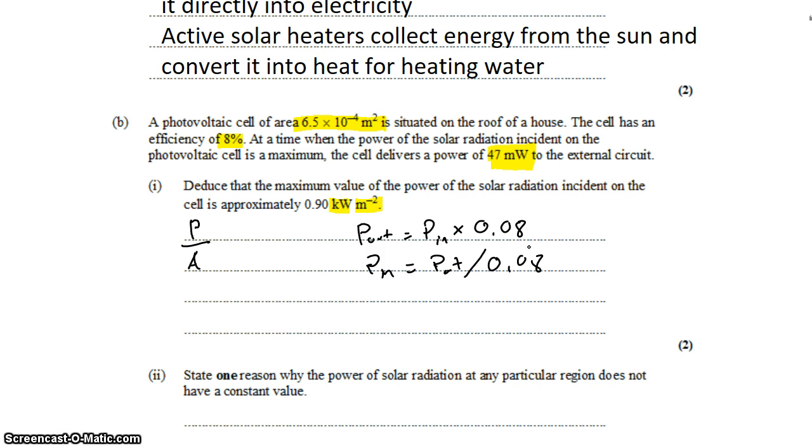The power reaching the cell, the power per unit area, so that's the intensity, would then be that power out divided by 0.08 per unit area, 6.5 times 10 to the negative 4 per square meter.